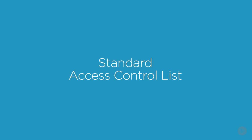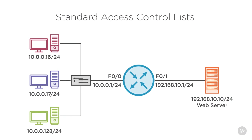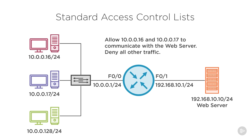Let's look at the standard access control list implementation by going through a simple example. Here I have a network with three devices on the 10.0.0.0/24 network on the left, and a web server at 192.168.10.10. I'm going to make up a rule and dissect it to make it work as an access control list.